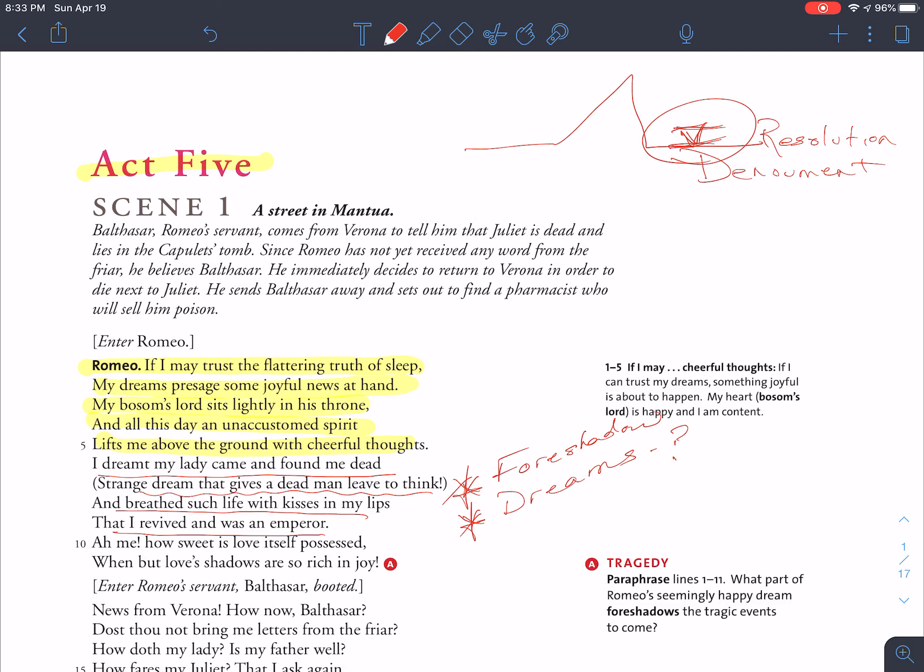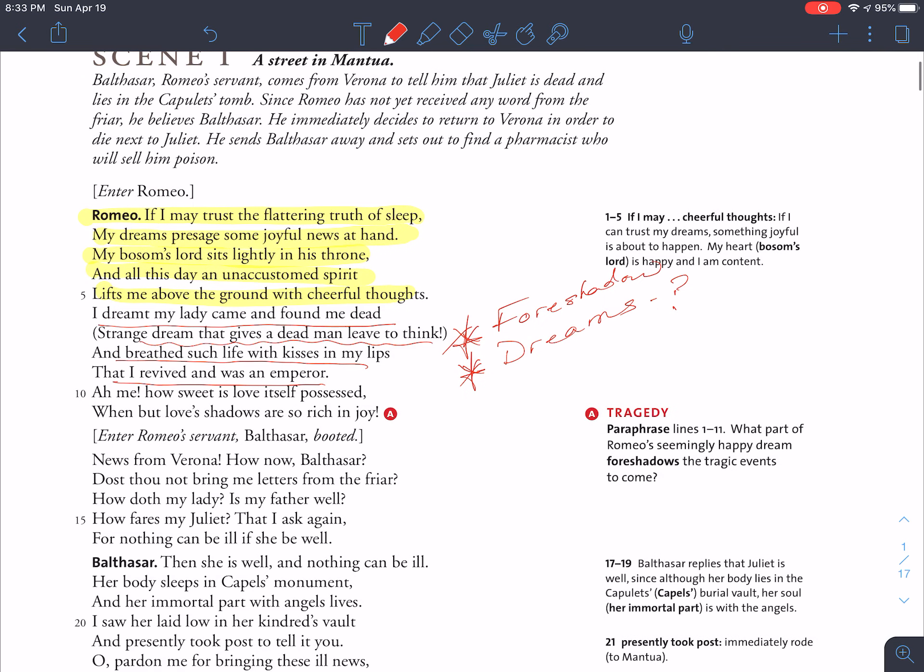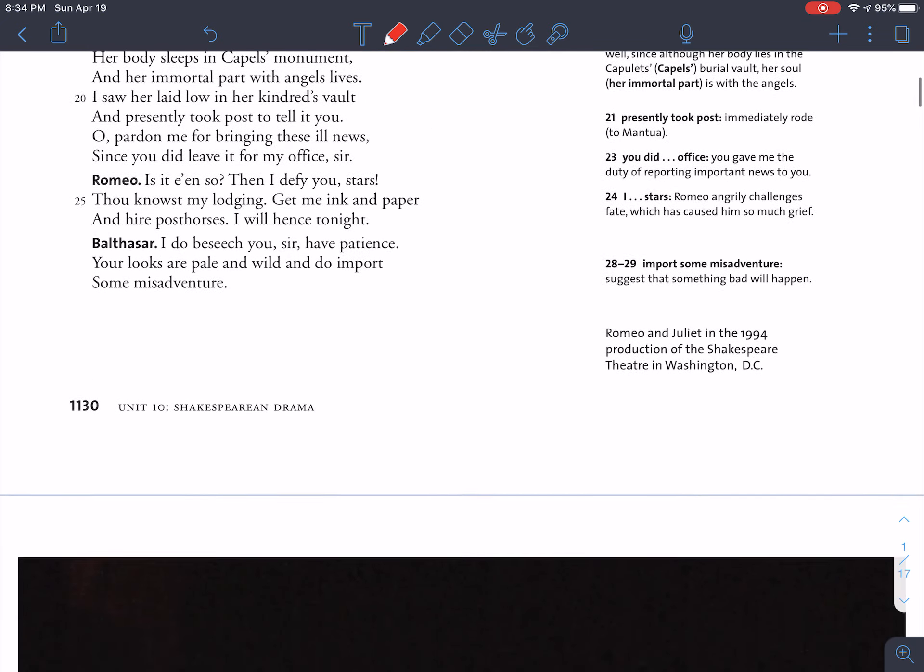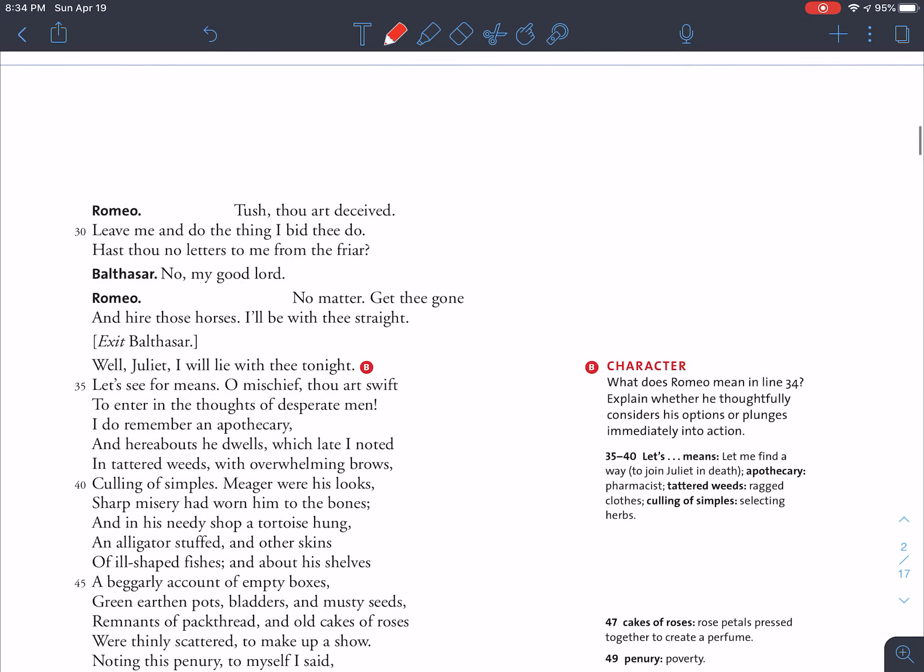But right in the midst of all of this glowy reflection, Romeo's servant Balthazar comes in booted because he's been riding his horse. Balthazar gives him some pretty bad news, and that starts off Act 5.